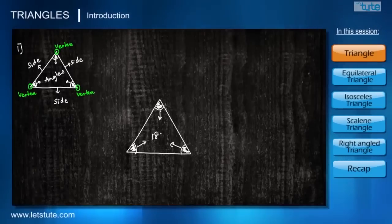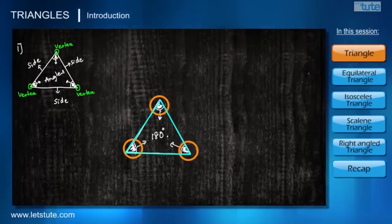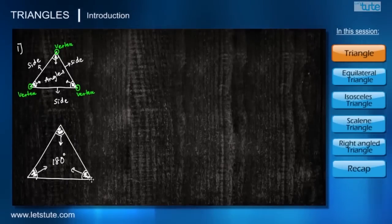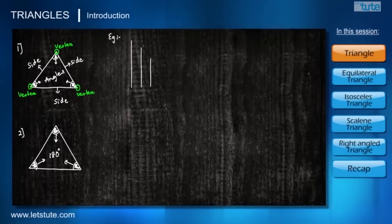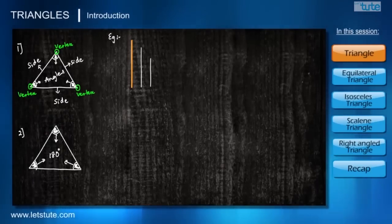The second thing we should know is that the angles measured and lengths of sides of a triangle are closely related — in other words, they are interdependent. For better understanding of this property, let me take three randomly sized line segments and try to form a triangle. Let me start with the first line and take the second line and make some angle.